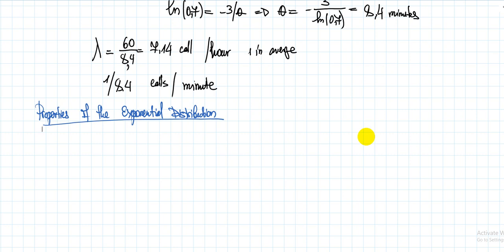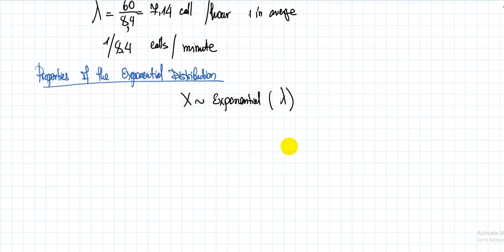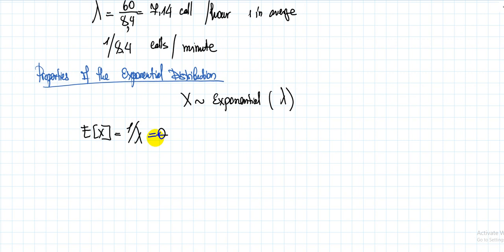Let's talk about the properties of the exponential distribution. If X has the exponential distribution with parameter lambda, sometimes the parameter is given as 1 over theta. In exams or quizzes, you may be confused by parameters given in different units, so make sure to use the parameters in the same units. The expected value of X is 1 over lambda, which is the average waiting time, also written as theta.